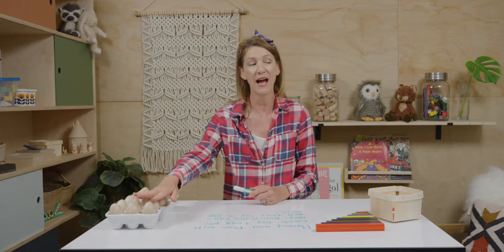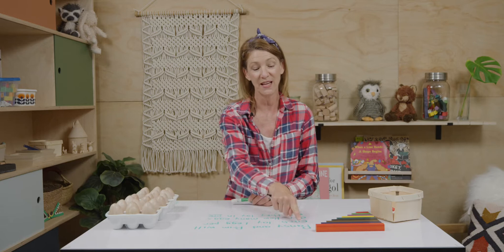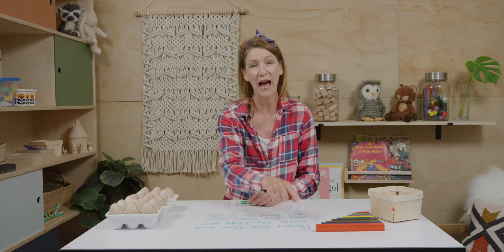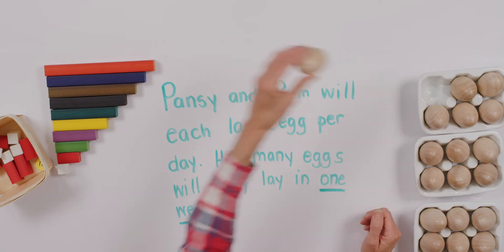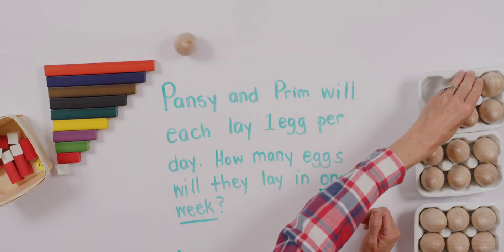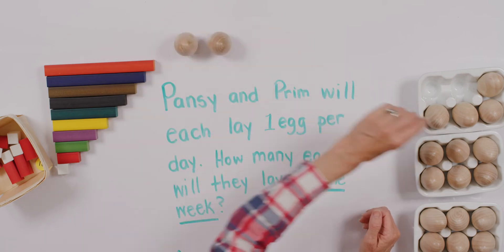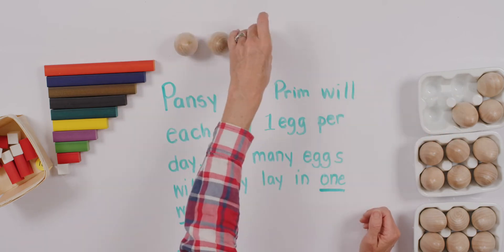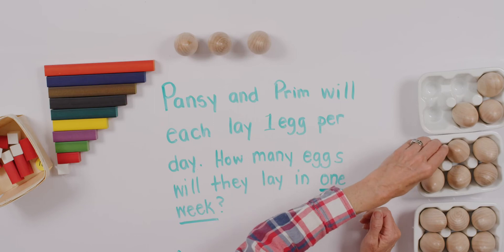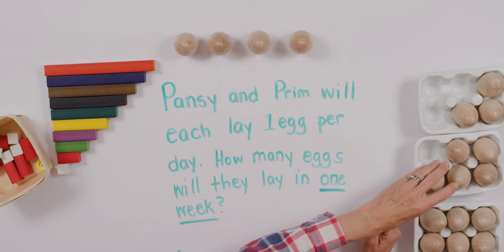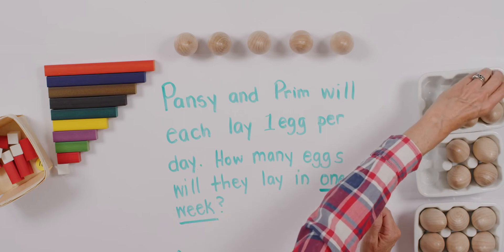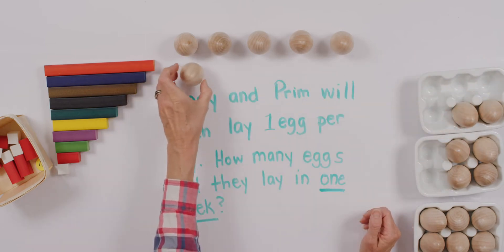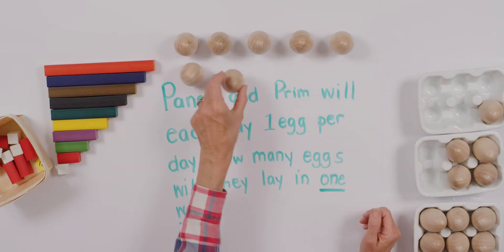So how about I get some eggs out and pretend they're Pansy's eggs. Will you count them with me? We have to count to seven because one egg for each day. Here we go. One, two, three, four, five, six, and seven.